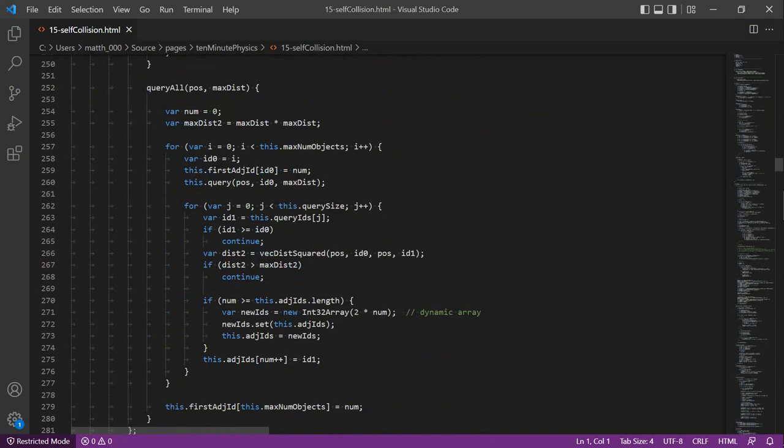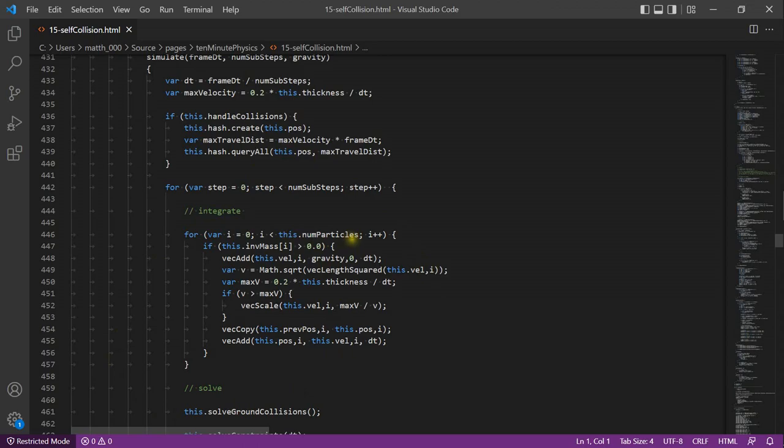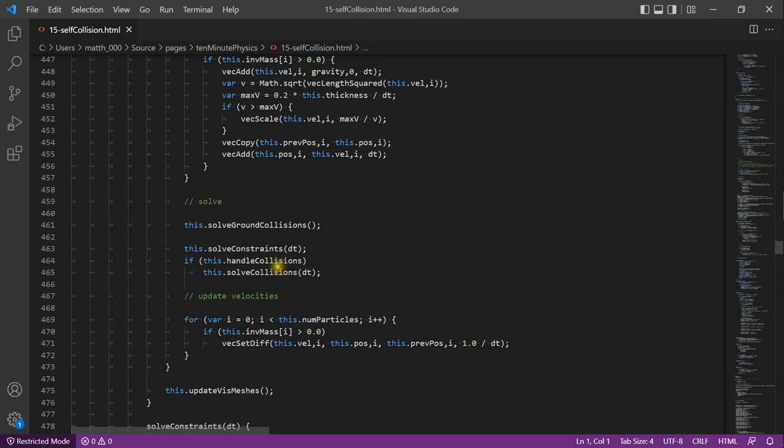In the simulation loop, I first compute the maximal velocity. Then I create the hash. Next, I create all the neighbor lists using a maximal travel distance. The maximal travel distance is the maximal velocity times the size of the time step of the simulation. Next, we integrate all the particles. In the solve part, we solve all the constraints. If we want to handle collisions, we also call the solve collision method. Then we update the velocities.